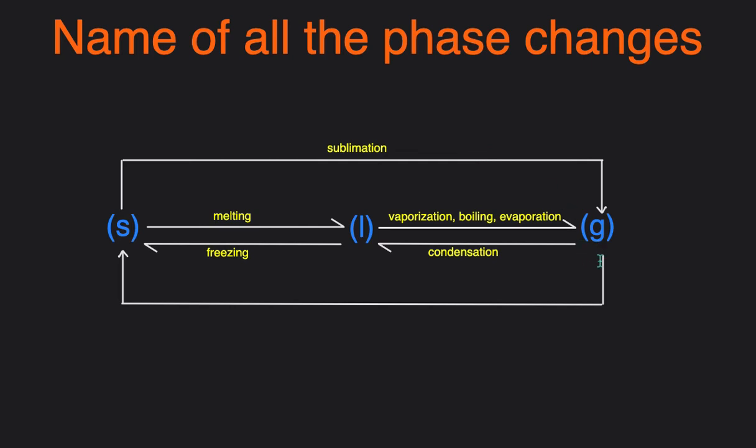And then the opposite, when you have a gas turning back into solid, that is called deposition. So the way you can remember this is you can think of the gas depositing on the surface and becoming a solid again. And those are the names for the six different phase changes. Hopefully this made it easier for you to understand and to remember them.